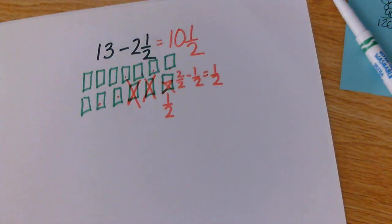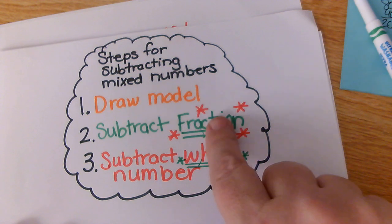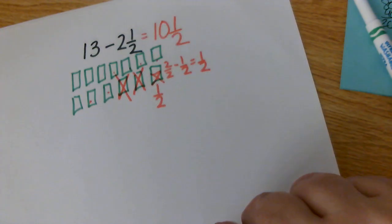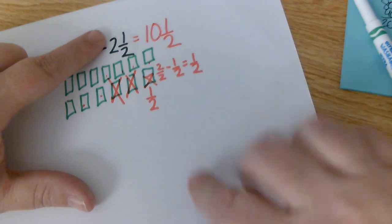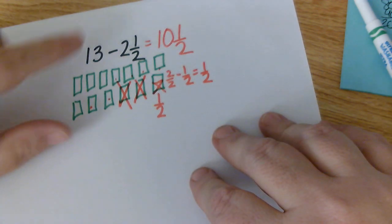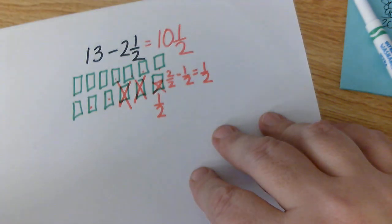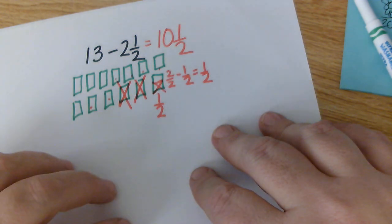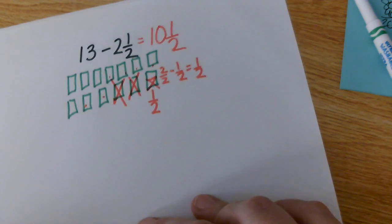Again, I want to remind you of the steps. Step 1: draw my model. Step 2: subtract my fraction. Step 3: subtract the whole number. If you did it the wrong way — subtracting the whole number first — you'd get 13 minus 2 equals 11, then say you can't subtract 1 half so the answer is 11 and 1 half. But 11 and 1 half is not the same as 10 and 1 half. So remember: always draw your model, subtract your fraction, then subtract your whole number.